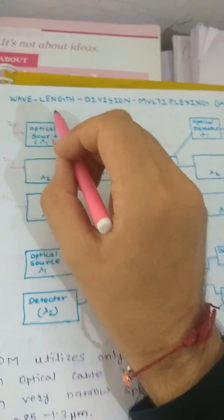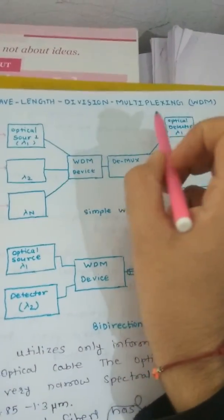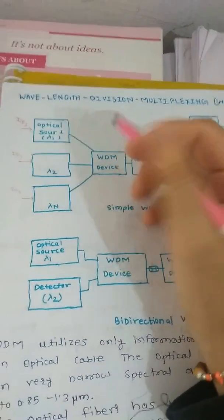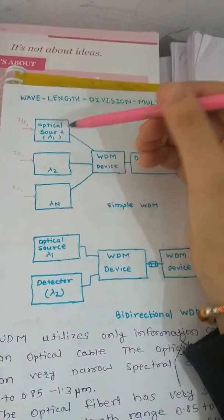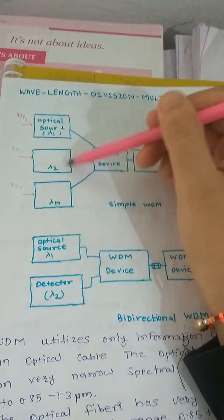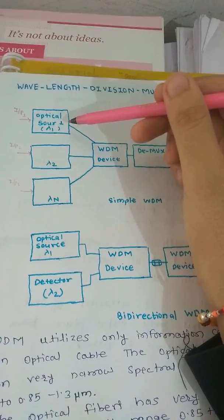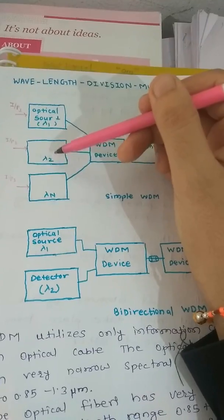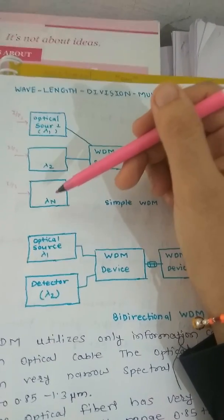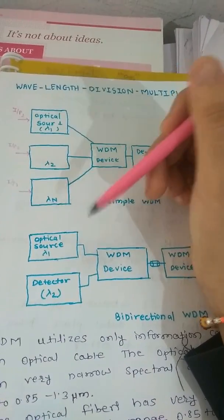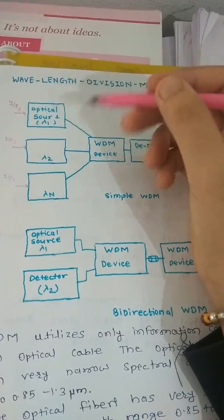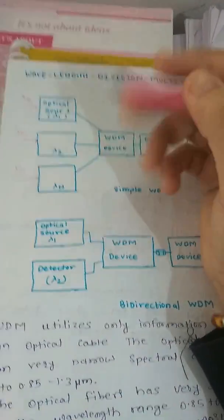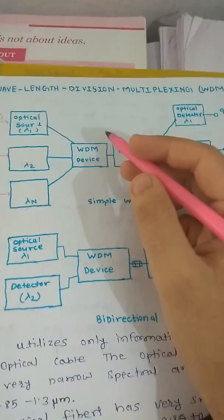Now we study wavelength division multiplexing, in short WDM. First, here we get inputs which are optical sources: one denoted as lambda 1, optical source two lambda 2, optical source three lambda 3, and optical source n, that is lambda n number of inputs.